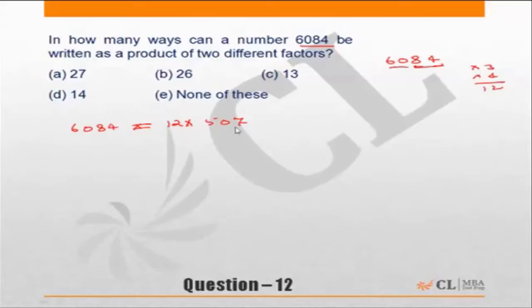Okay now 507, I know 17 into 3 is 51, or 170 into 3 is 510, that means 169 into 3 should be 507. So this is nothing but 12 into 3 into 169, and 169 is 13 squared.